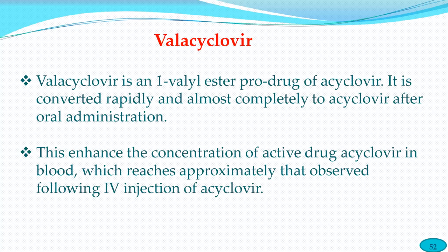Then the virus takes control of the host cell's mRNA and produces its own proteins. Drugs like acyclovir are converted from monophosphate to triphosphate, which inserts a defective DNA strand into the virus, causing viral death or growth arrest — that is the mechanism of action.